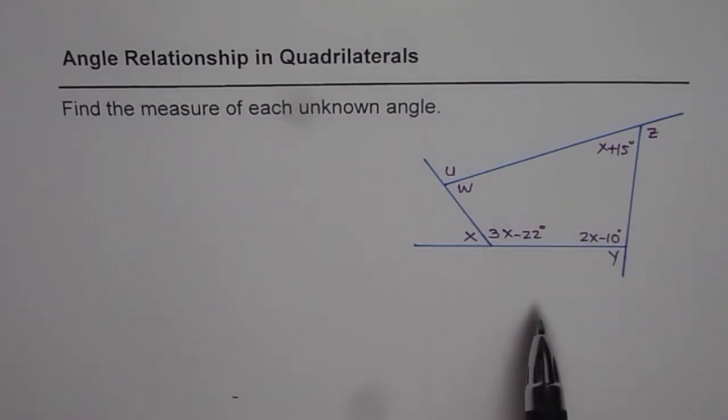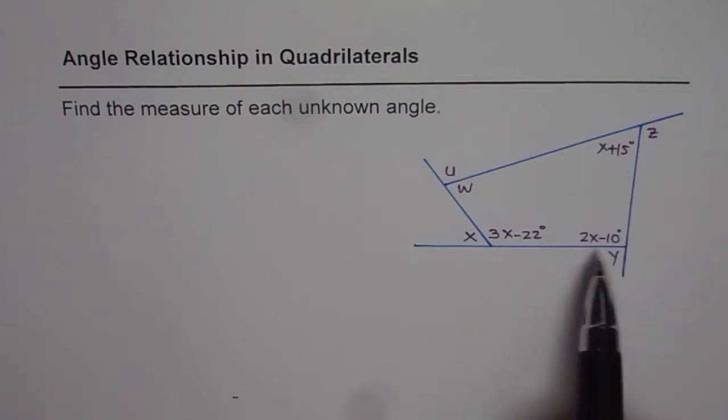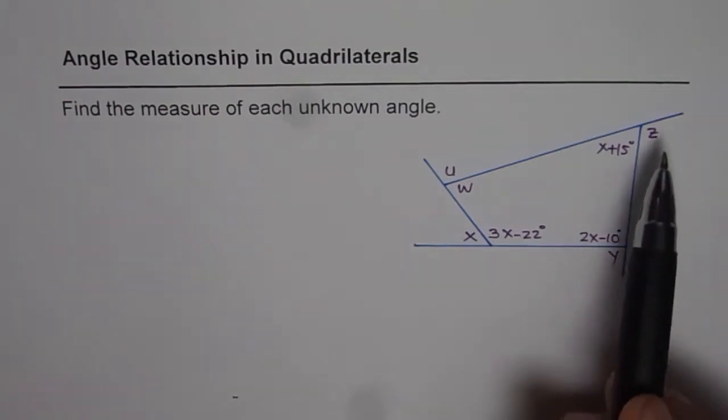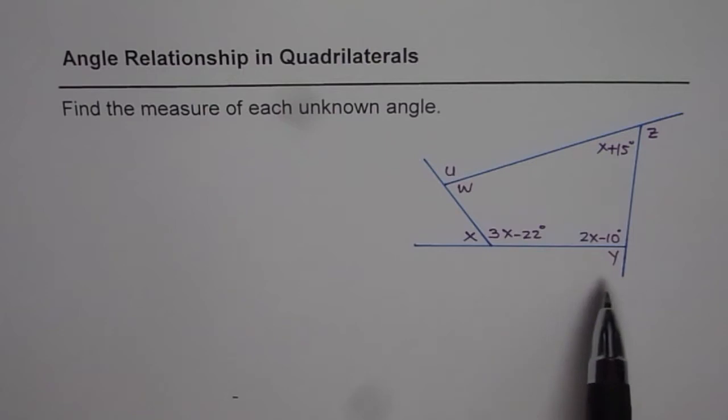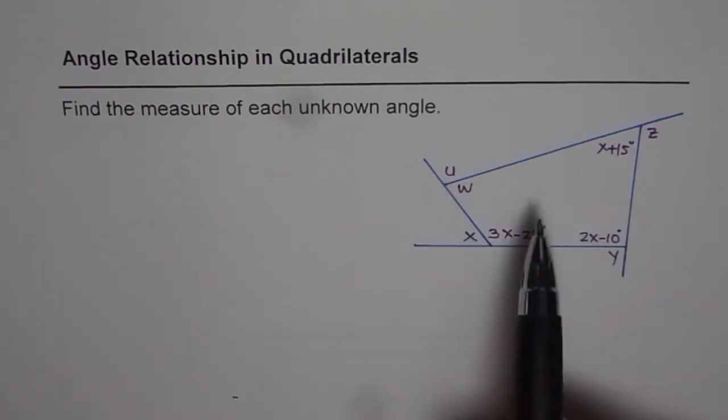So here we have a quadrilateral where three angles are given in terms of x and then we are given exterior angles x, y, z and u. You need to find all these angles. That's the exercise.